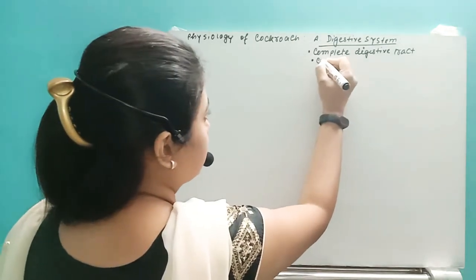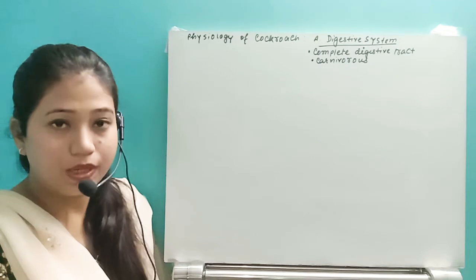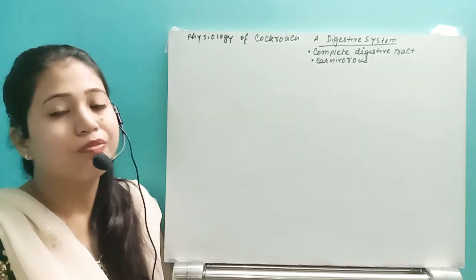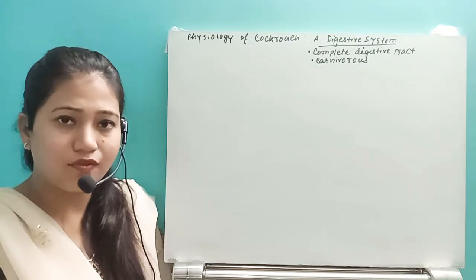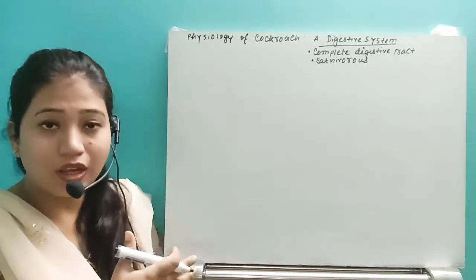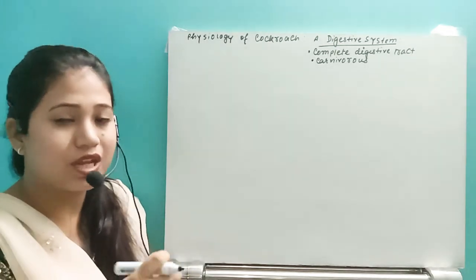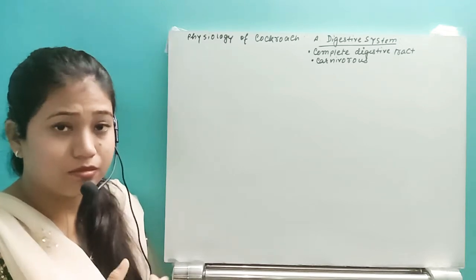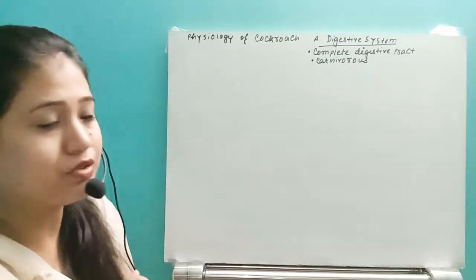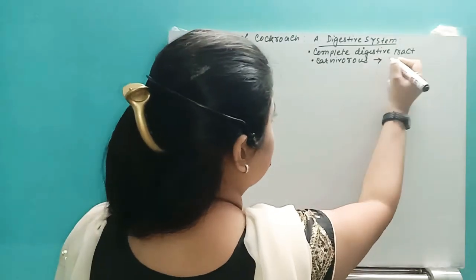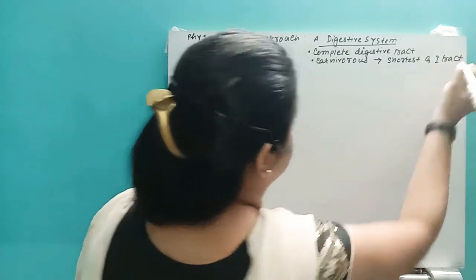This organism is a carnivorous animal. Remember: if it is a herbivorous animal they have the longest alimentary canal; if it is an omnivorous animal they also have a long alimentary canal, but not the longest. Carnivorous animals have the shortest alimentary canal — the shortest GI tract.